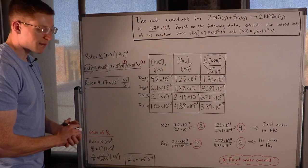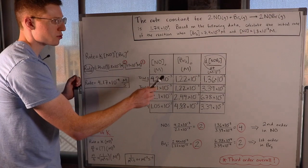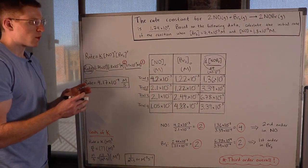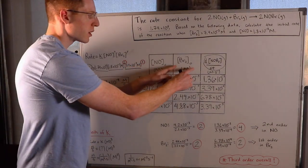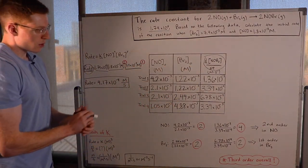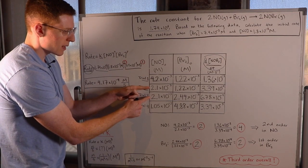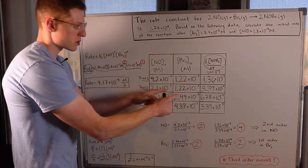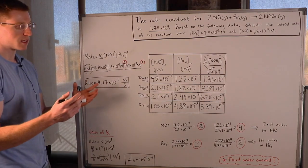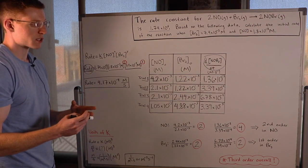Now let's do the same thing for Br2. We want two trials where the concentration of Br2 changes but the concentration of NO stays the same, so we can look at only Br2's effect on the overall rate. Trial 2 and trial 3 are perfect — the concentration of NO stays the same, and the concentration of Br2 changes.